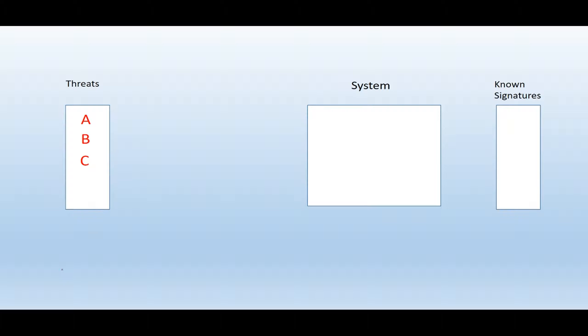So let's say we have three threats A, B, and C, and let's say threat A deletes files off your system. A system in this scenario can just be a laptop, for example. Threat A will enter the system and the system will want to compare this threat with previously known signatures.